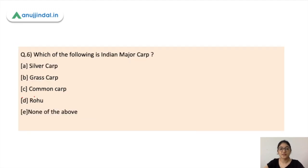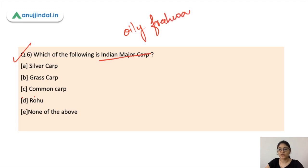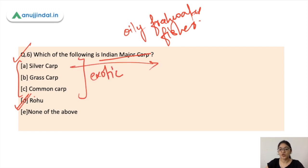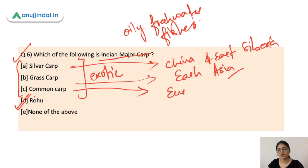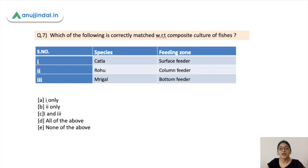Question number 6: which of the following is an Indian major carp? The correct answer is Rohu. Rohu is an Indian major carp while the others are exotic species. Silver carp is native to China and East Siberia. Grass carp is found in East Asia, including Vietnam. Common carp is found in European and Asian waters. Indian major carps include Rohu and Mrigal, which are native to Indian rivers.